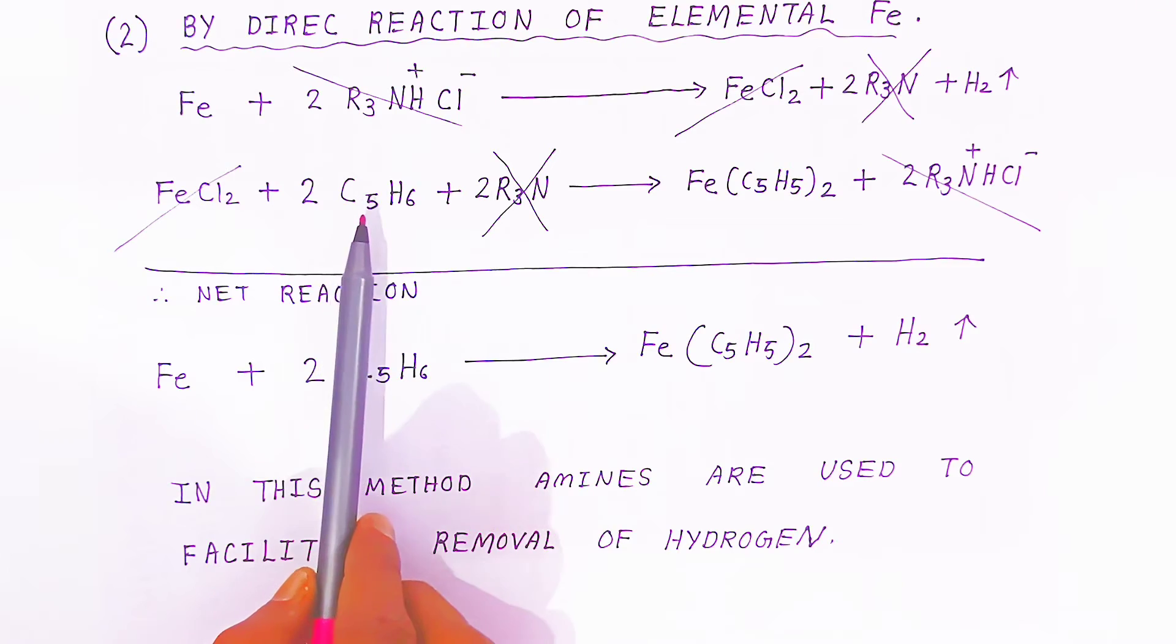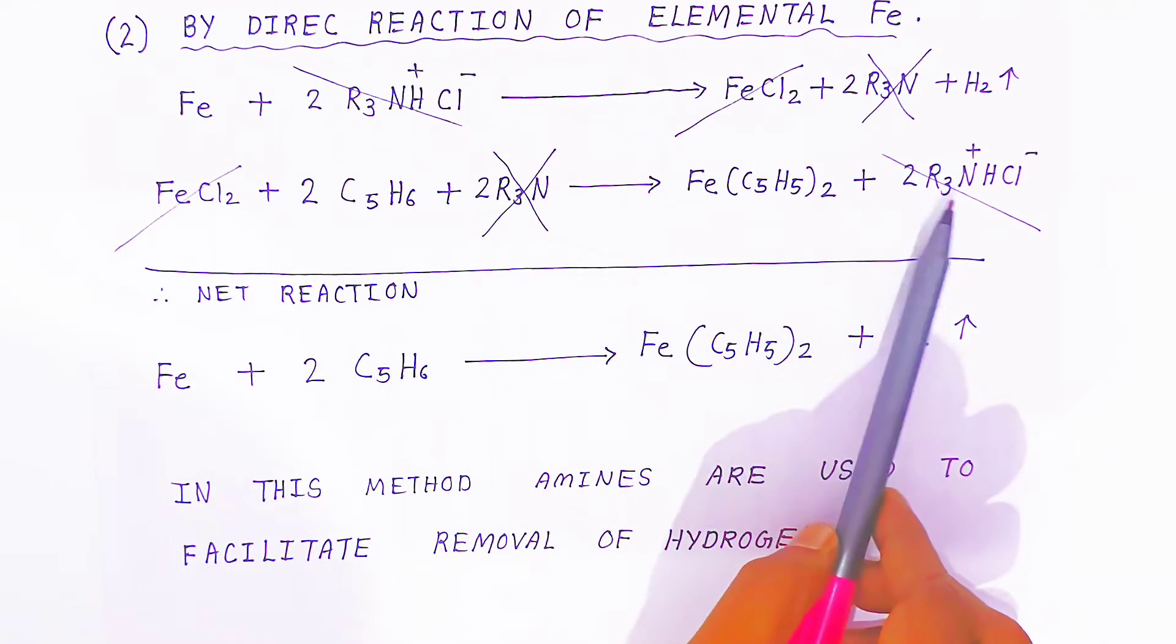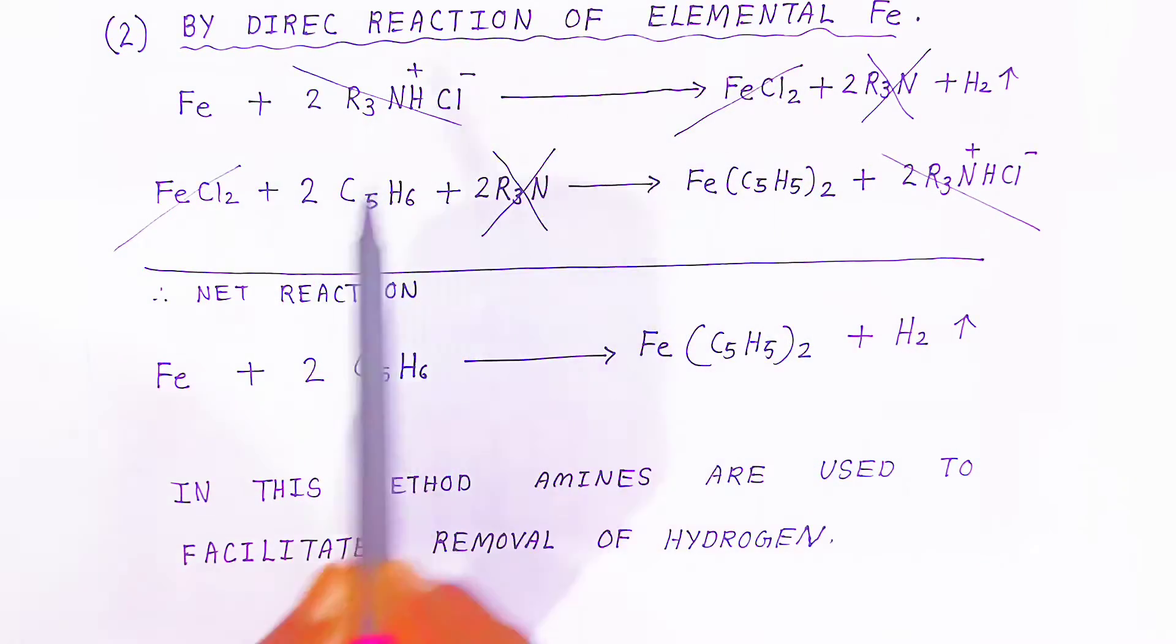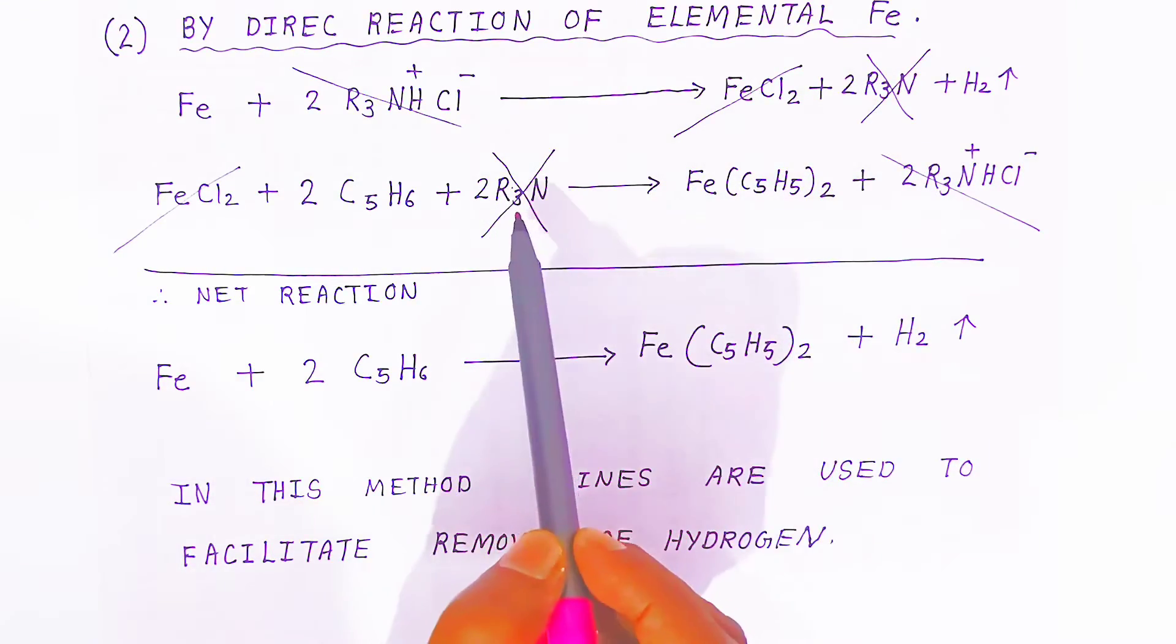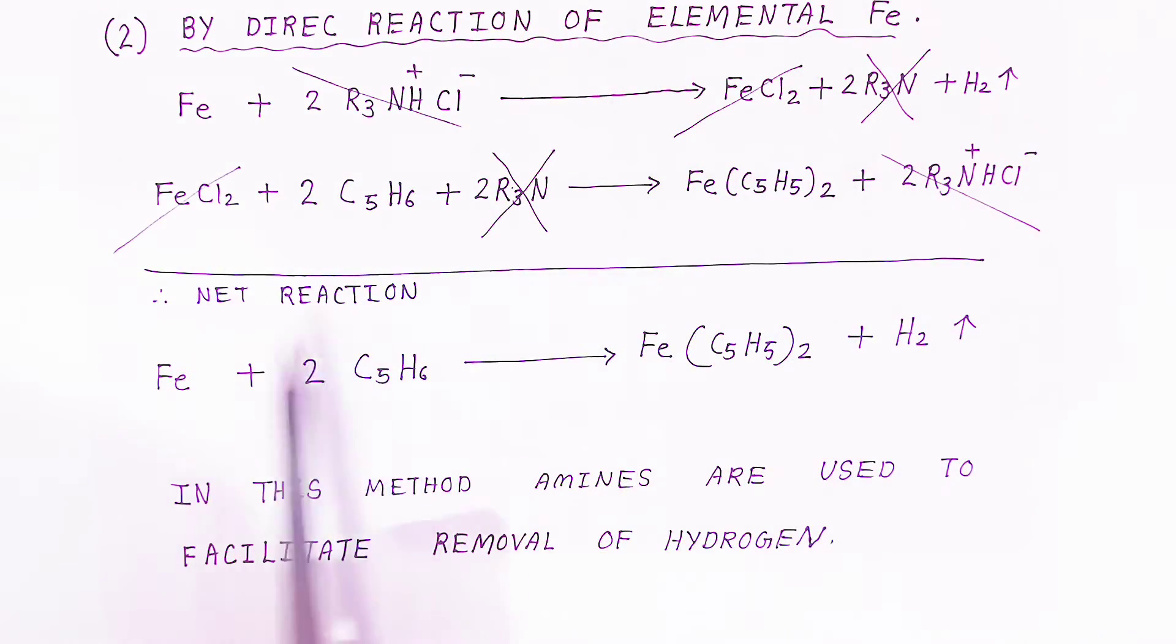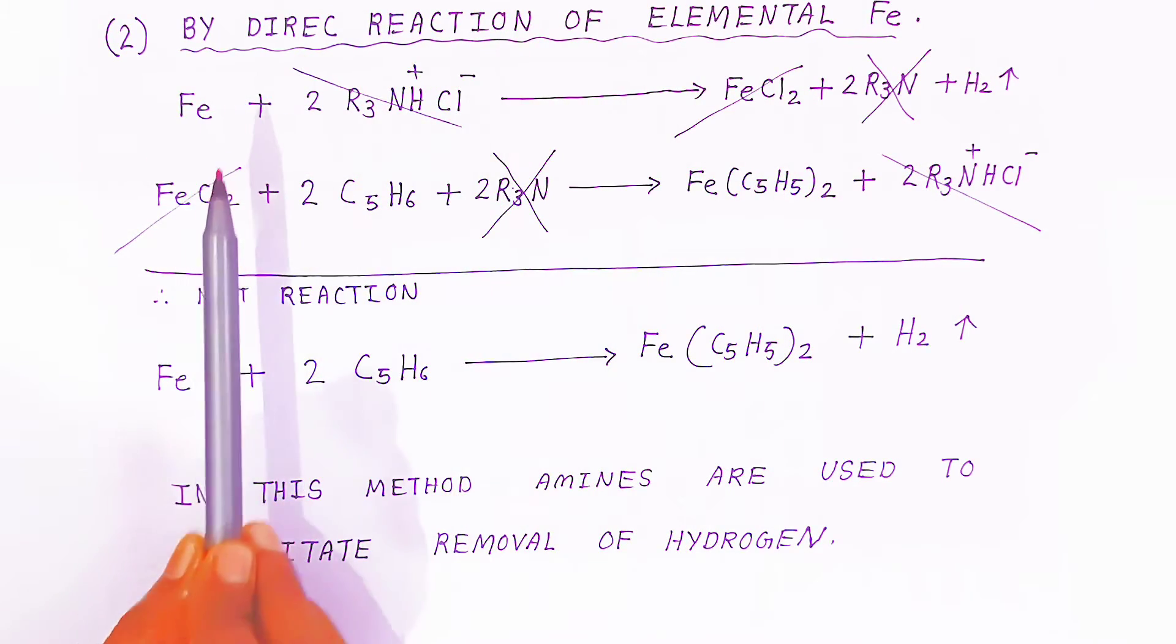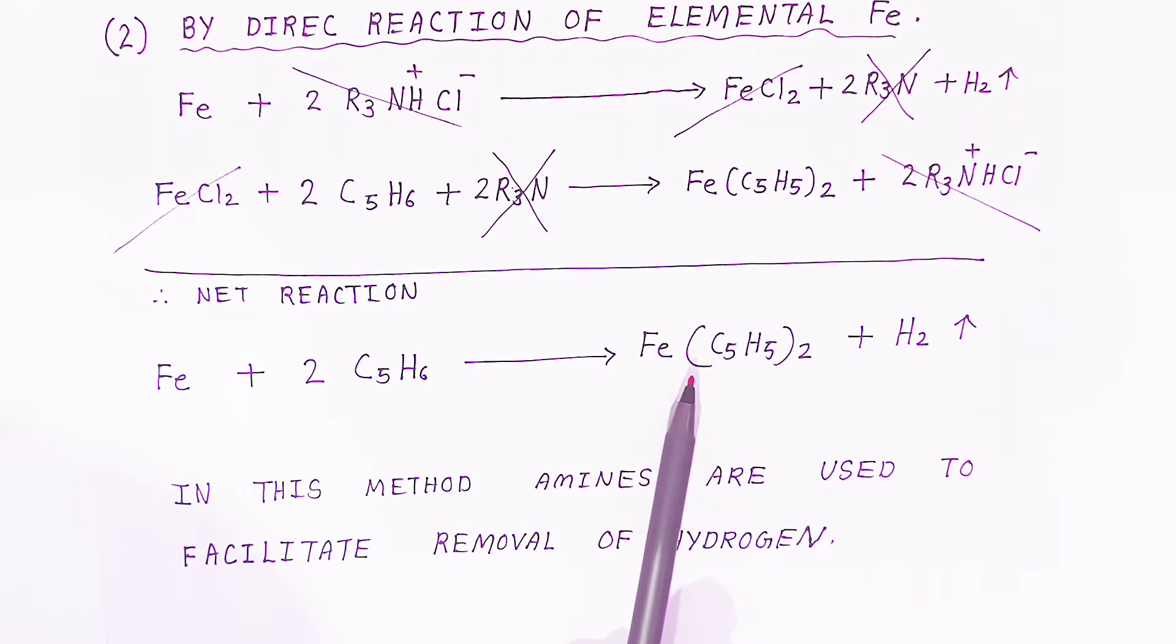This further reacts with C5H6, R3N, and it will give you ferrocene, and you are getting the salt back. This will cancel with this and this part will cancel with this - we are going to write net reaction.